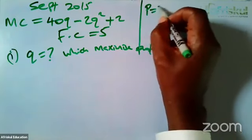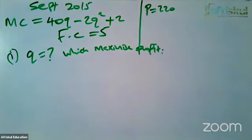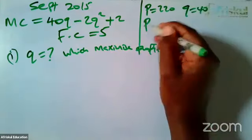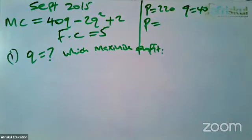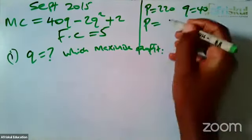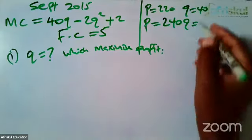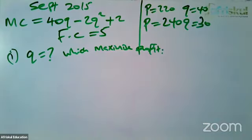But when price is 220, quantity demanded is 40. And then when P increases to 240, they have told us Q will be 30 units. And then they want us, number one, to give them the quantity which in this case here must be sold for us to maximize profit.